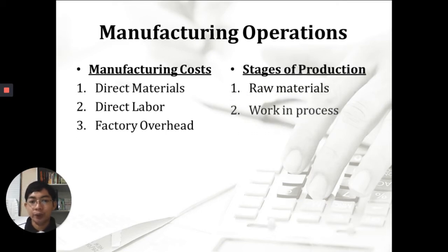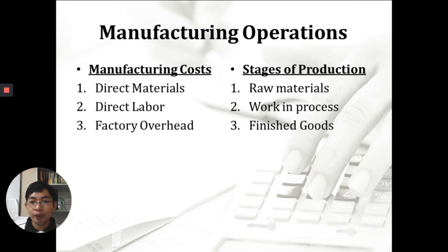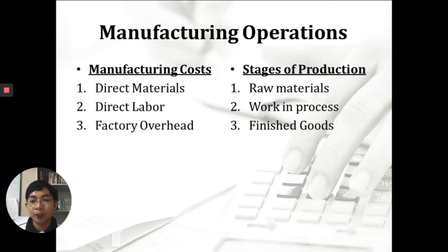The stages of production are: first, raw materials — when you order metal and wood, these are not yet for sale. Next is work in process — products not yet 100% completed, such as furniture not yet painted or varnished. And lastly, finished goods — these are already available for sale, with all necessary components incorporated. Finished goods is the last stage of your production.